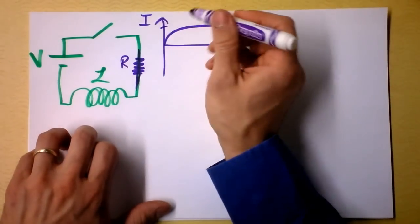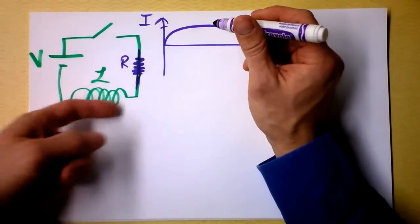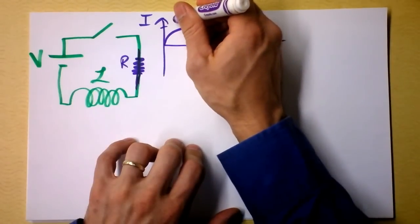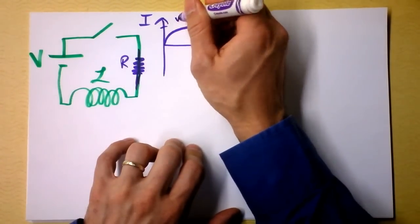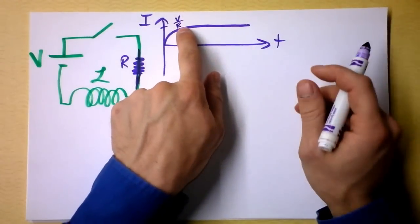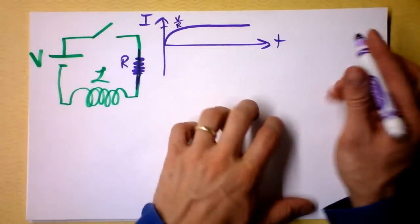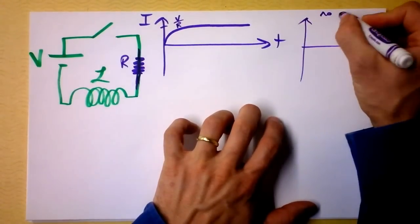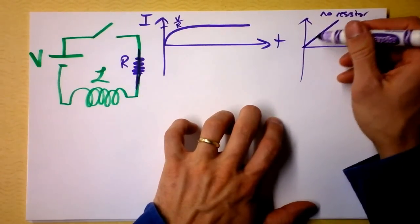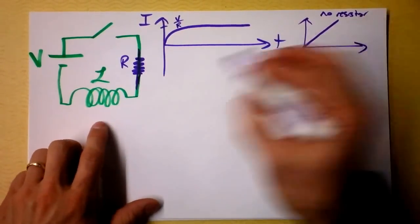There we go — that's how the current can asymptotically approach a value with the resistor there. That current it's approaching is when the inductor appears as a short in the circuit, so that current would be the voltage of the battery divided by the resistance of the resistor. If the resistor is in fact zero, the current would go up as a straight line — we could put more and more current into this thing.